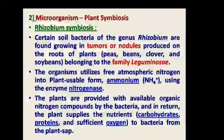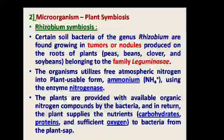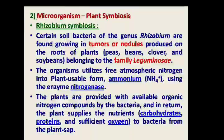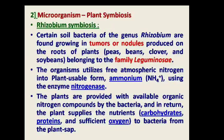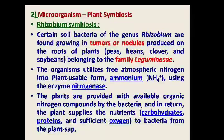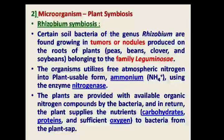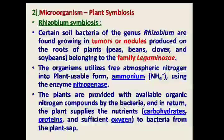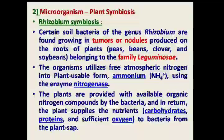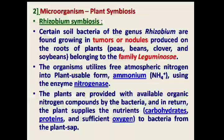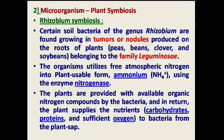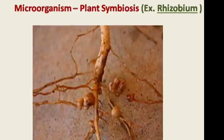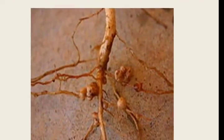The second type of symbiotic association is between microorganism and plant. The best example is Rhizobium, a best example of endosymbiosis in which microorganisms live inside the plant cell. Rhizobium forms tumors or nodules in roots — called root nodules — especially in the family of leguminous plants. The microorganism utilizes free atmospheric nitrogen and provides it to the plants in the form of ammonium, while the plant provides carbohydrates, protein, and sufficient oxygen to the bacteria.